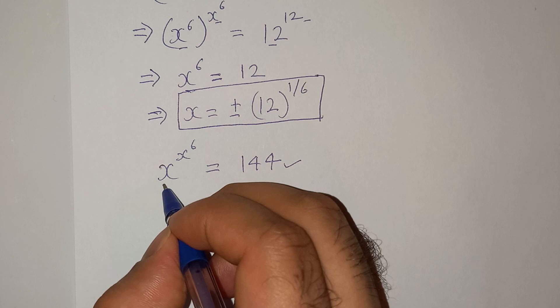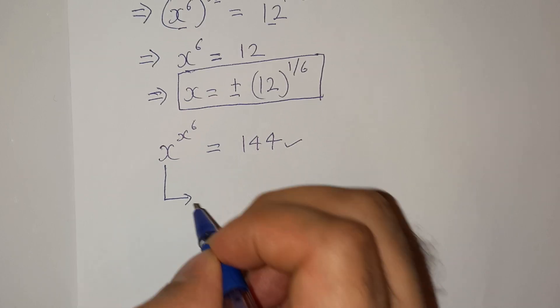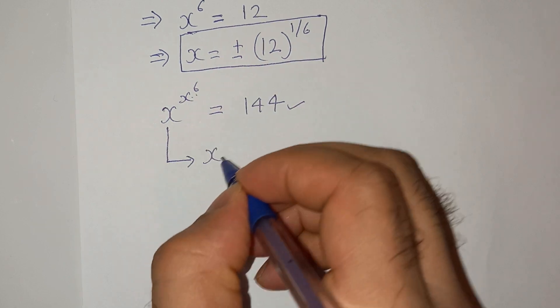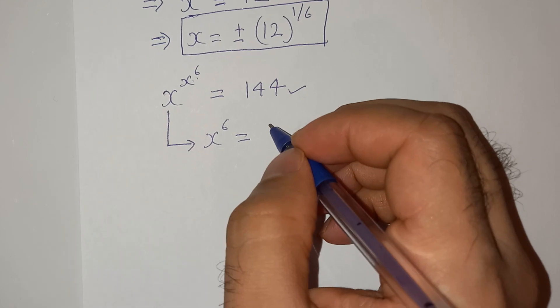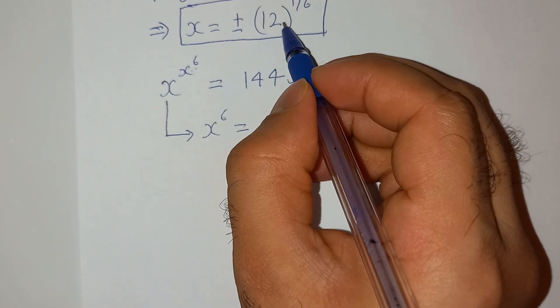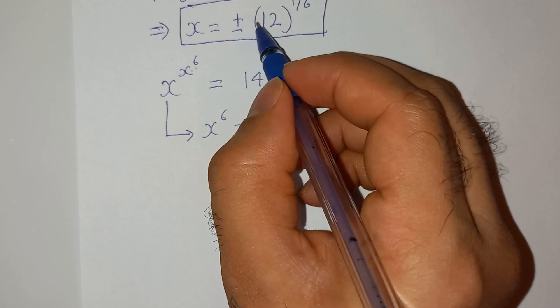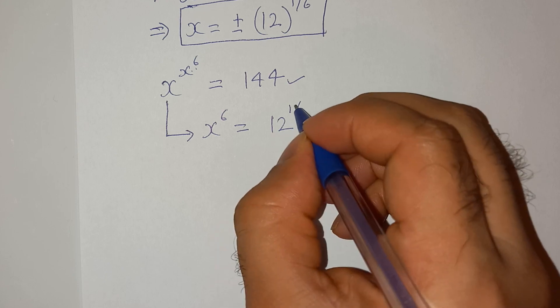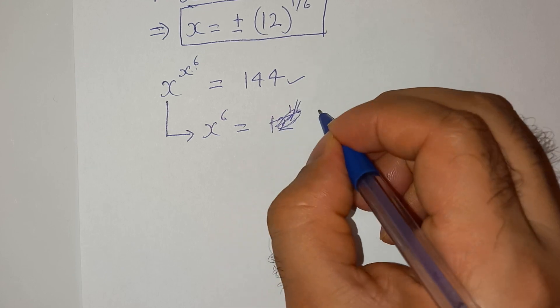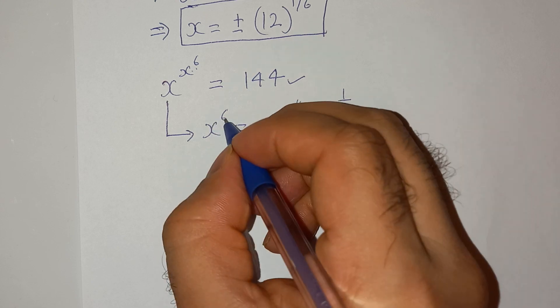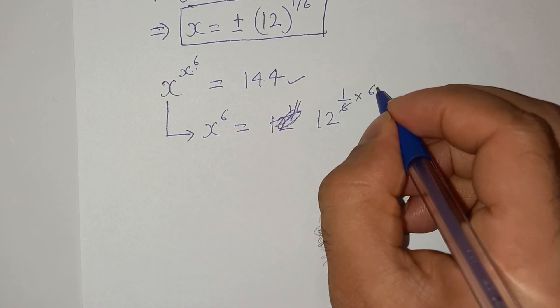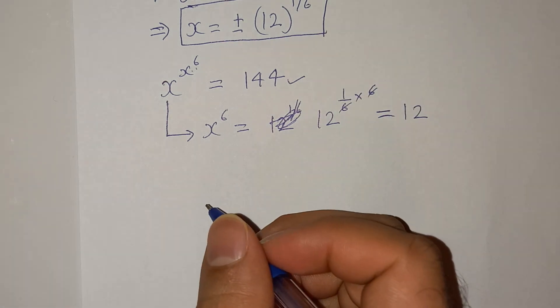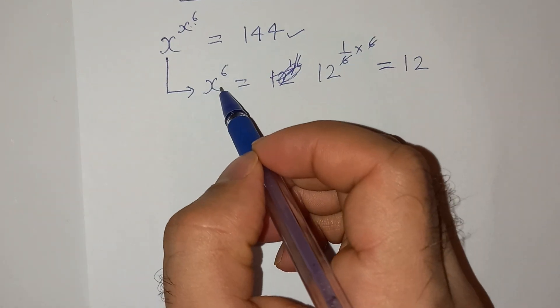Now I am going to first solve this. So you see x^6. So let me first simplify this x^6. The value of x is ±12^(1/6). So let me just take the positive value 12^(1/6) and then multiply it by 6. So this will cancel out. We have 12. So this is the value of x^6.